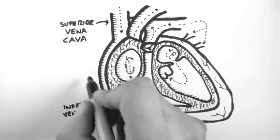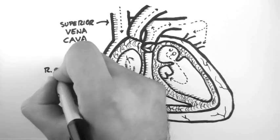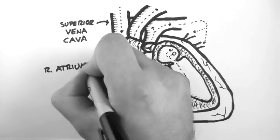The blood from there goes into the right atrium, and that's this chamber of the heart here.